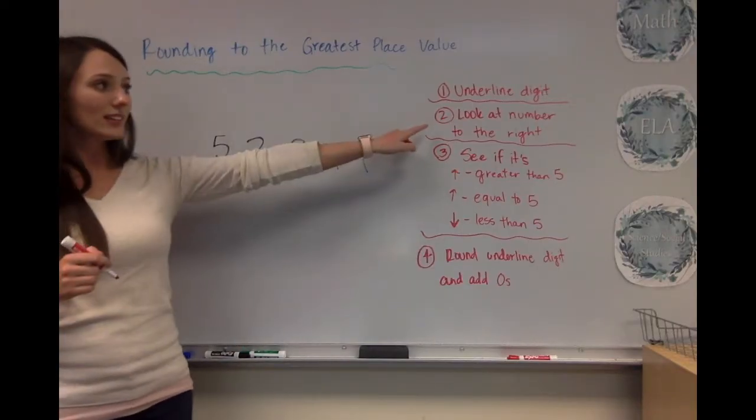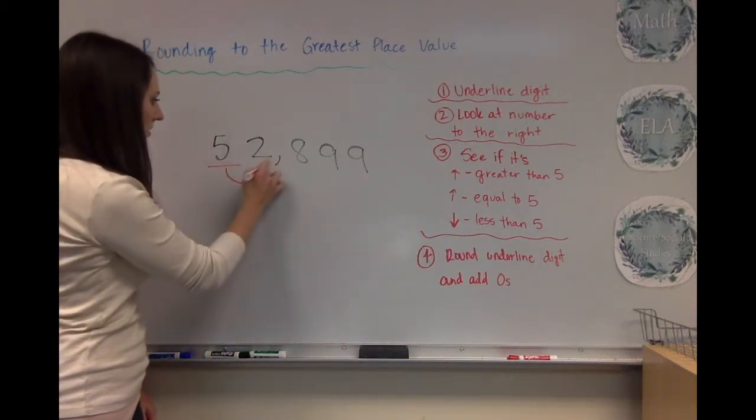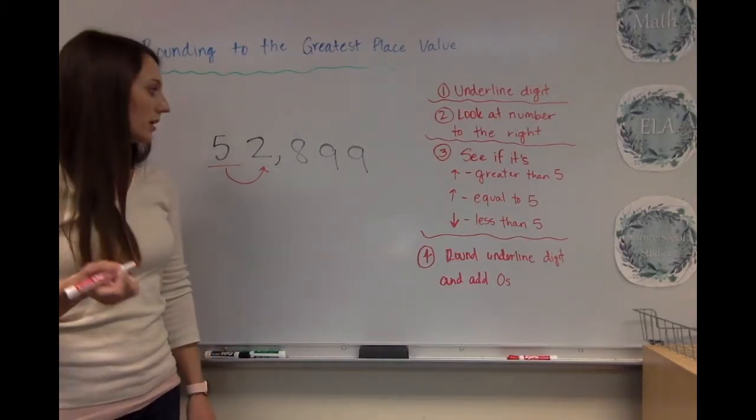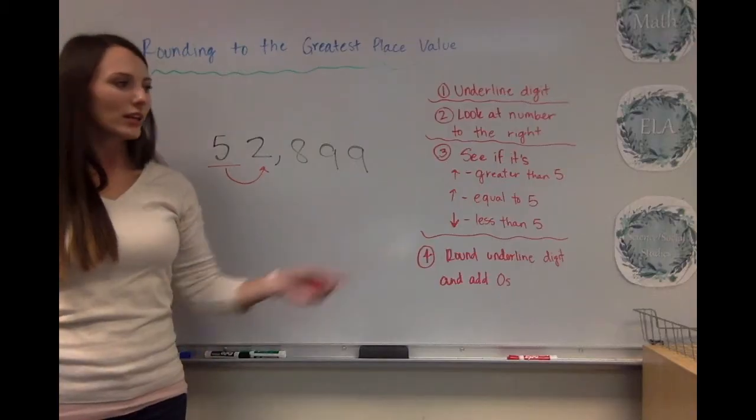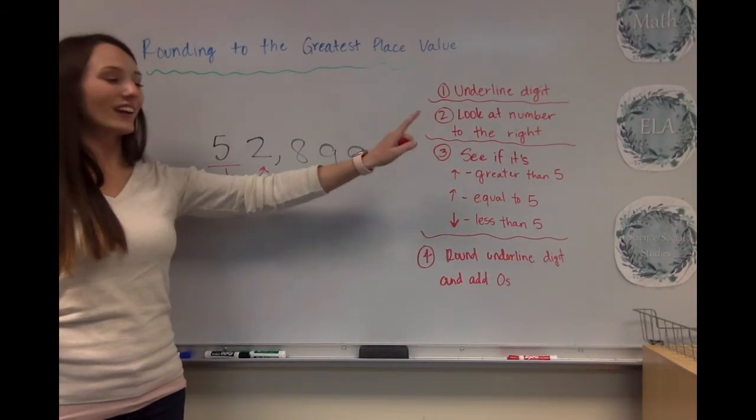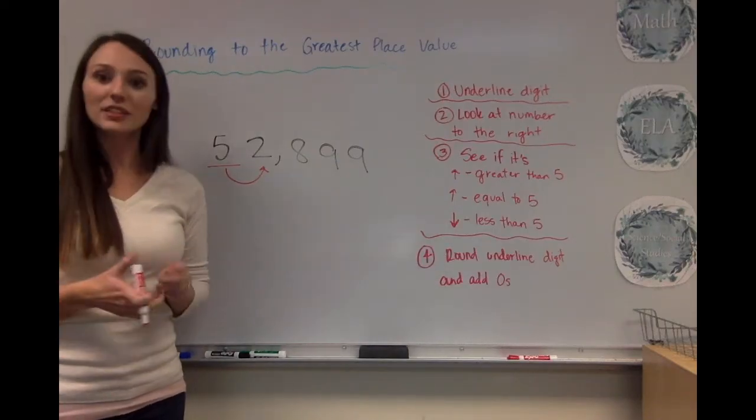Okay, but remember we're going to look at the number to the right. So step number two, we're going to draw our little arrow. Look at the number to the right of that greatest place value. And that's going to be a 2. So now we move on to step 3. See if it's greater than 5, less than, or sorry, equal to 5 or less than 5.